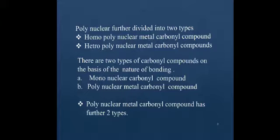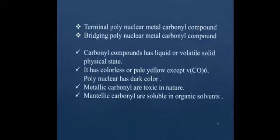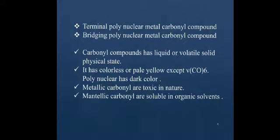Basically, we study spectroscopic evidence to show carbonyl compounds on the basis of the nature of bonding. There are two types: mononuclear carbonyl compounds and polynuclear metal carbonyl compounds. Polynuclear metal carbonyl compounds are further classified as terminal polynuclear and bridging polynuclear.